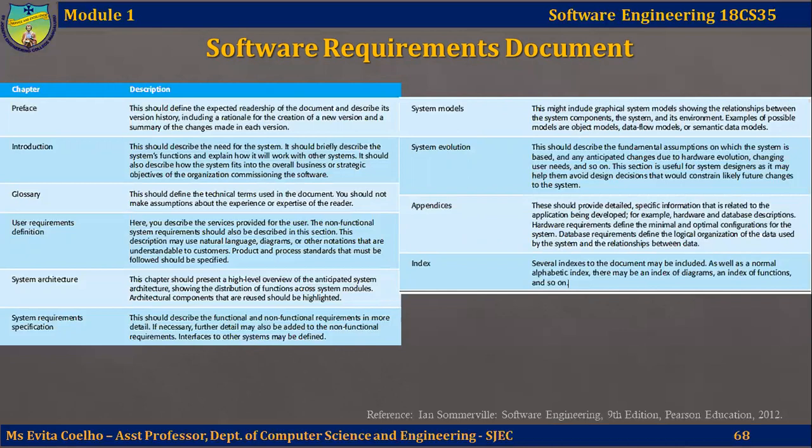Next comes the glossary, which defines the technical terms used in the document. This is followed by the user requirements definition, which describes the system services provided to the end user. The non-functional system requirements are also described here. User requirements are written in natural language with diagrams, making them understandable to the end user who could be a non-technical layperson. This is followed by system architecture, which proposes a high-level view of the system to be developed, shows the distribution of various functions and different modules implementing the different requirements, and highlights components that may be reused.